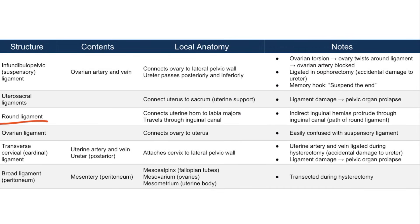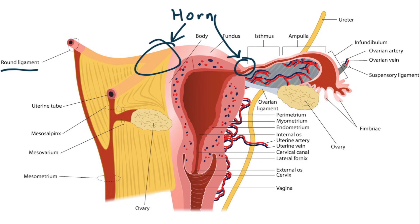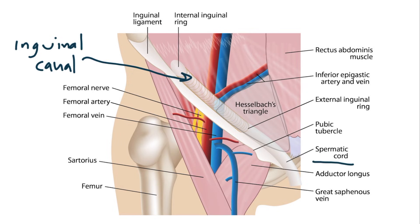Now let's talk about the round ligament. The round ligament connects the uterine horn to the labia majora. You can see the uterine horn here and the round ligament starting there and continuing outward. The round ligament travels through the inguinal canal. In males, the inguinal canal conducts the spermatic cord, but in females it conducts the round ligament. So if there's an inguinal hernia, the intestines will travel with the round ligament and end up going to the labia majora.